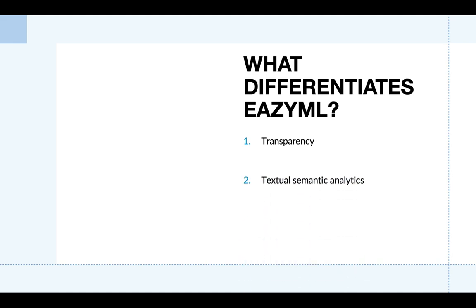We also read a lot of textual content in our daily lives, and that influences our decisions. Most machine learning platforms can't process text, limiting their ability to make accurate predictions. EasyML is the only platform that extracts intelligence from textual data well beyond sentiments, making its predictions precise and correct.